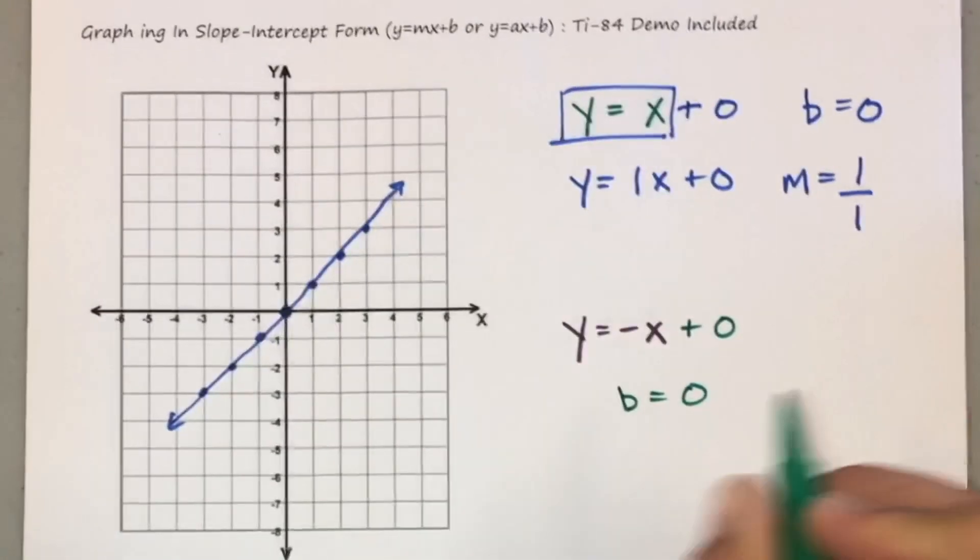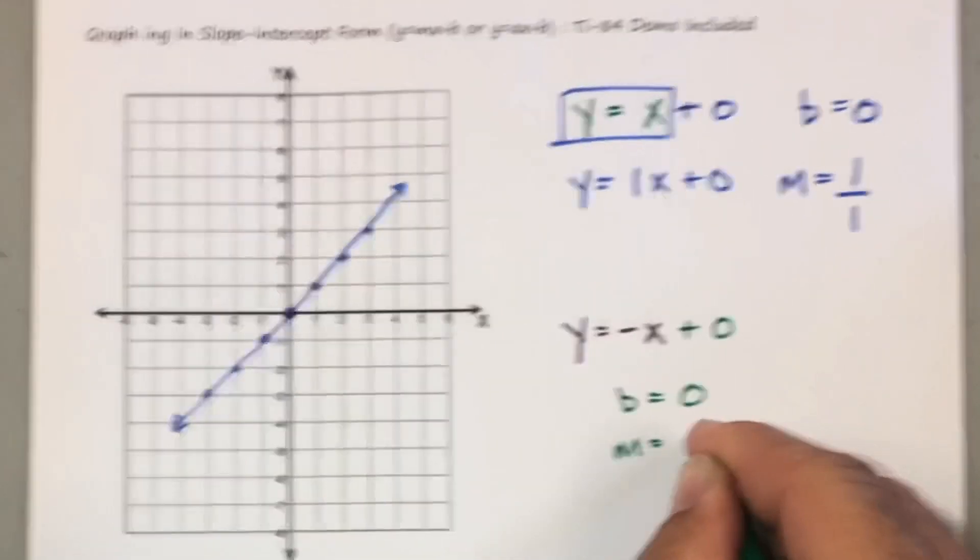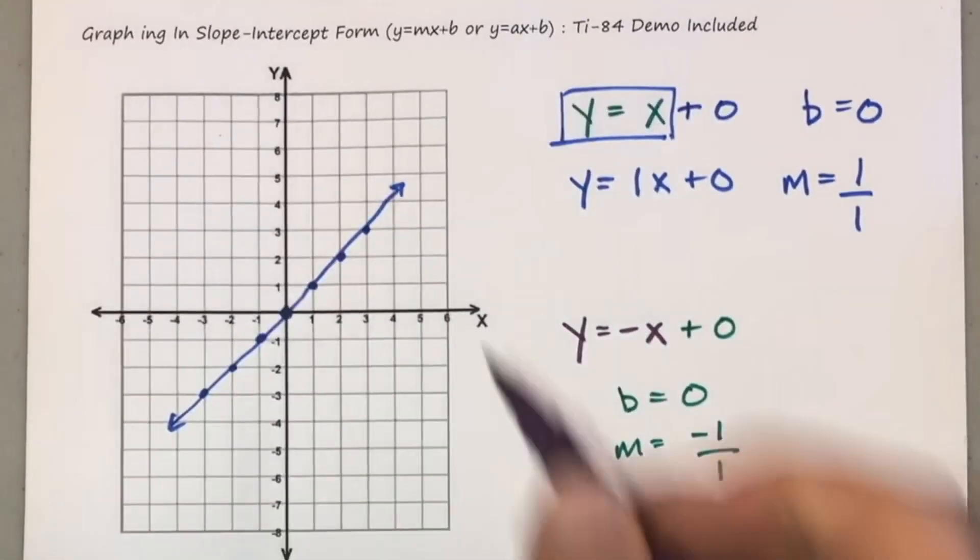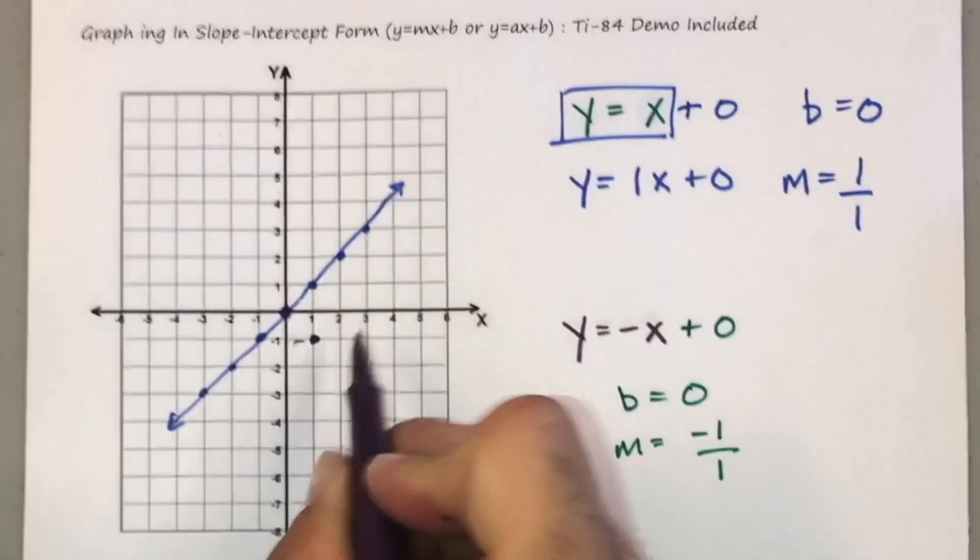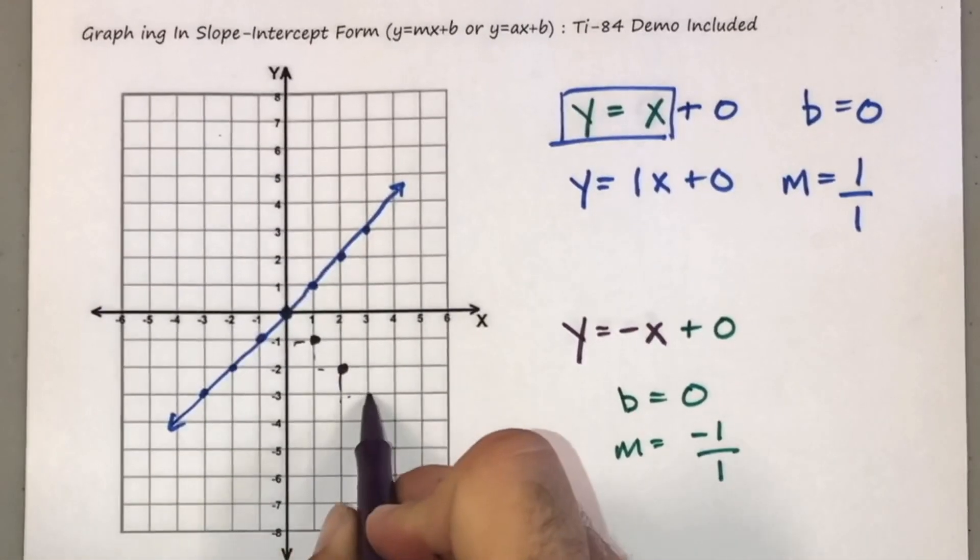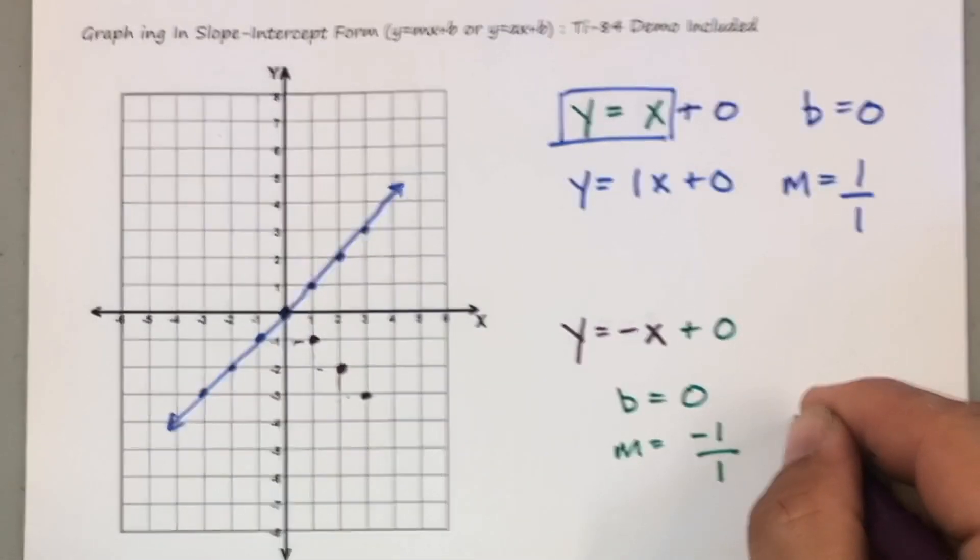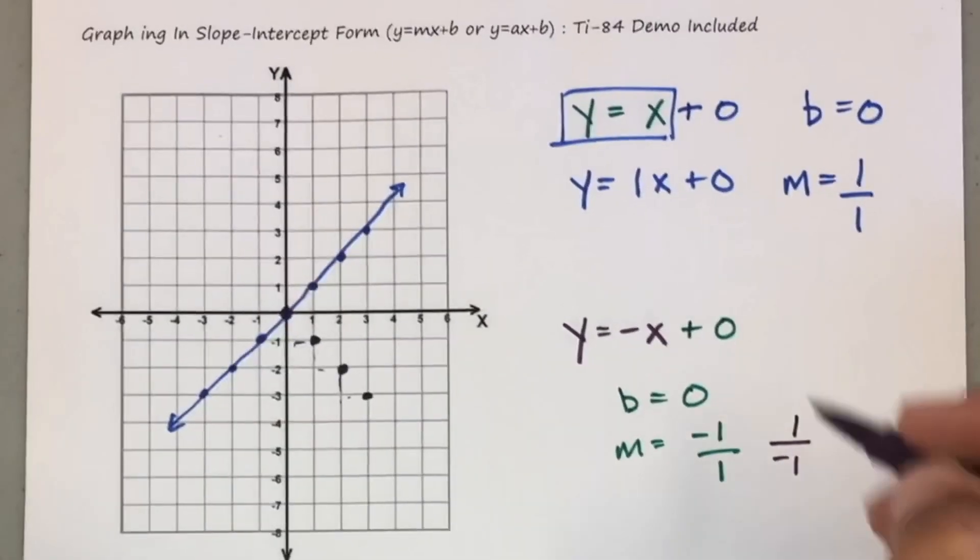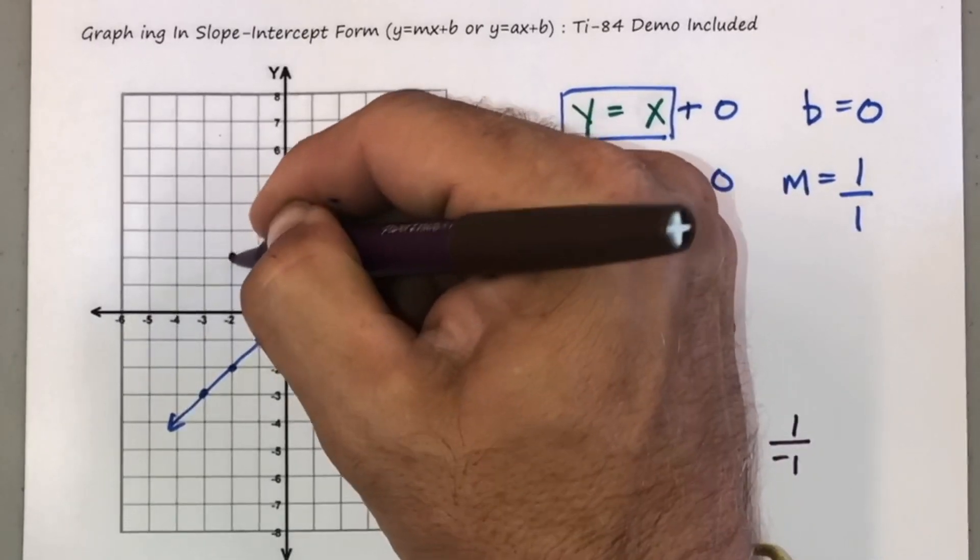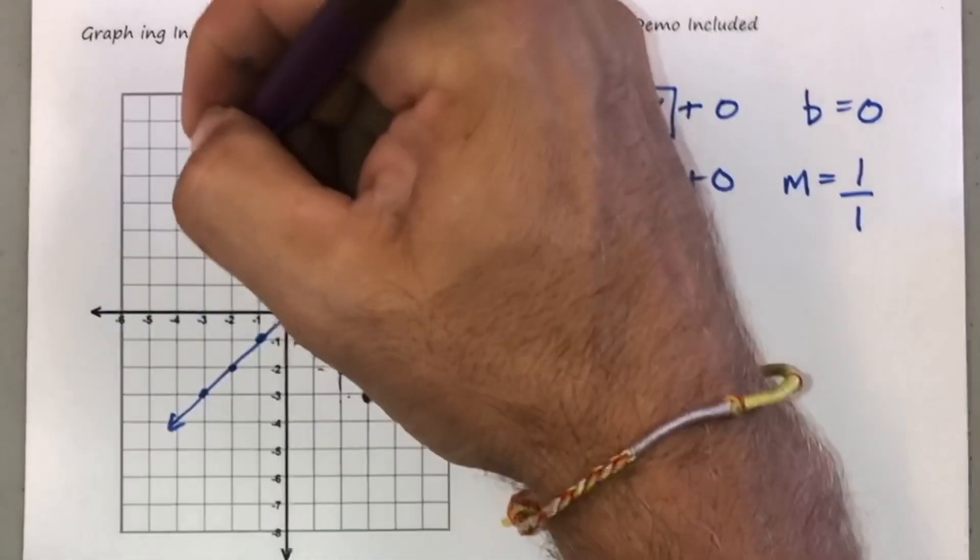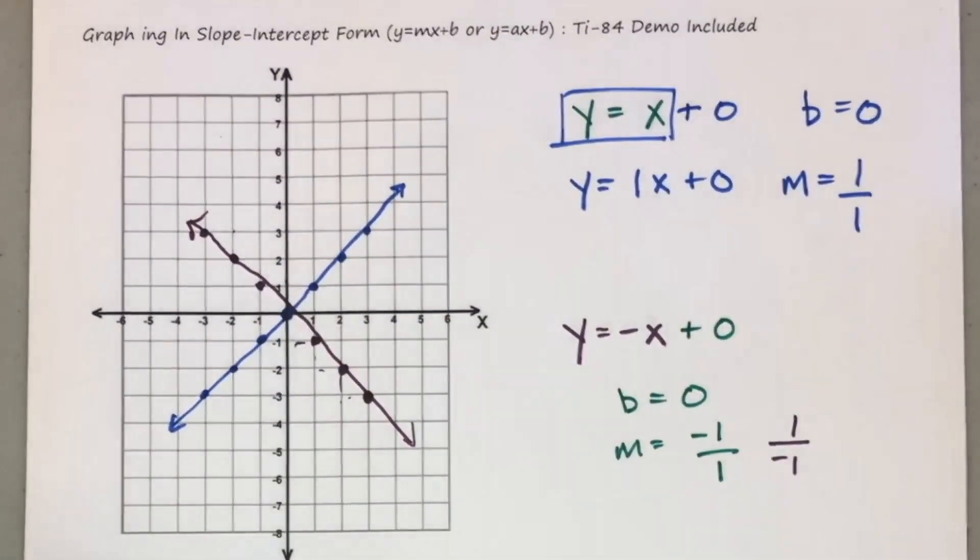So basically, again, your y-intercept being zero, and then your slope being, in this case, negative one over one, and that's where we look a little different. Again, you start at zero, and you're going down one, over one, and then remember, the inverse of negative one over one is one over negative one. I'm showing you that because sometimes you need to graph kind of the other way, right? Let's just say, and you want to be able to kind of show the slope in two different directions.